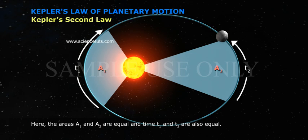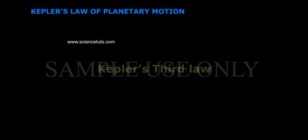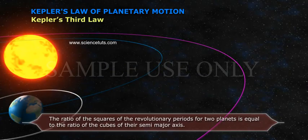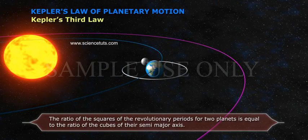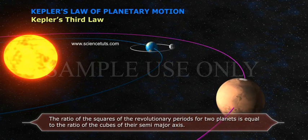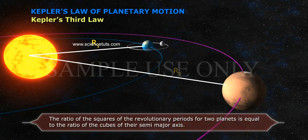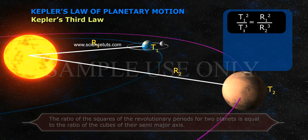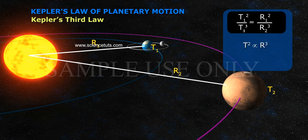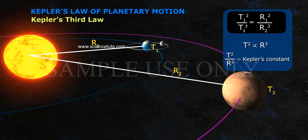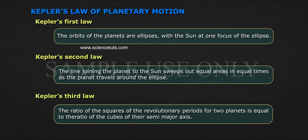The times T1 and T2 are also equal. Kepler's Third Law: the ratio of the squares of the revolutionary periods for two planets is equal to the ratio of the cubes of their semi-major axes. T² is directly proportional to r³, so T² divided by r³ is equal to Kepler's constant.